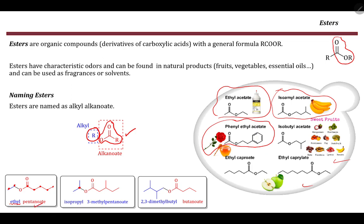In this case, the branch connected to the oxygen is an isopropyl group, so this is isopropyl. Then counting one-two-three-four-five gives pentanoate, but there is a methyl group, and numbering from the carbonyl gives one-two-three, making it 3-methylpentanoate. The same applies when branches exist on the alkyl part: counting gives butyl, with two methyl groups — dimethyl — at positions two and three, and the acid chain has four carbons giving butanoate, so this is 2,3-dimethylbutyl butanoate.